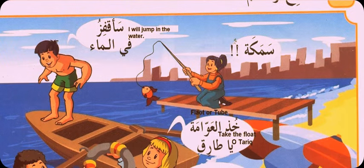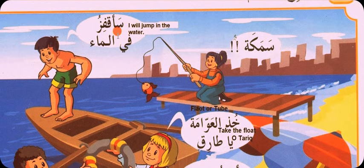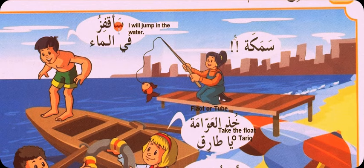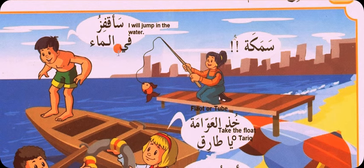Someone said she got a fish and she happily said 'oh fish!' — 'sauf afizu filma' meaning 'I'll jump in the water.' Simultaneously I am also covering grammar. Whenever we use 'seen' at the beginning of a verb, it means it will happen in the future — 'sauf afizu filma' means 'I will jump in the water.'